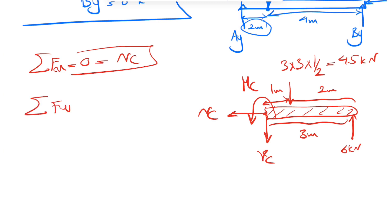We'll do sum of all forces in Y equals zero. We're going to have six minus 4.5 minus VC equals zero. So our VC would be 1.5 kilonewtons. No negative sign, which shows the direction for VC is correct.